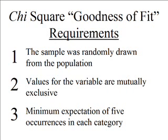Number two: the values for the variable are mutually exclusive. For example, if our variable was 'do you work,' the values could be yes and no. Those two values would fulfill this requirement — either someone works or they don't; they couldn't do both. So our values for the variable must be mutually exclusive.